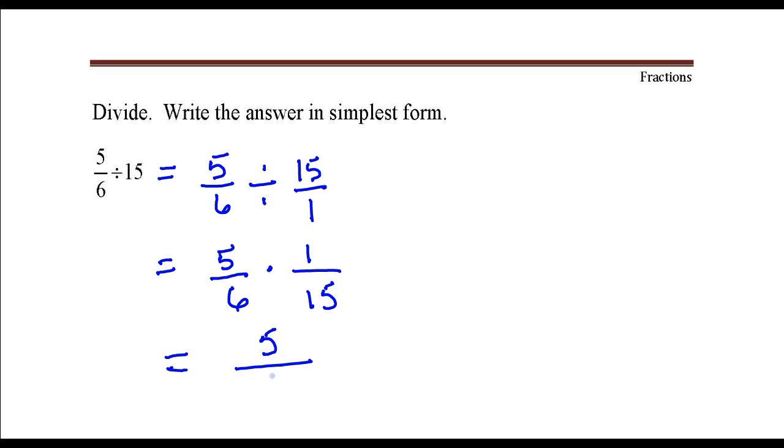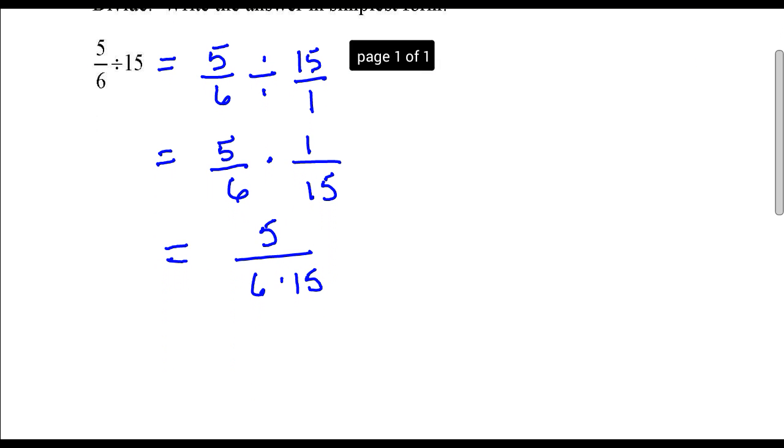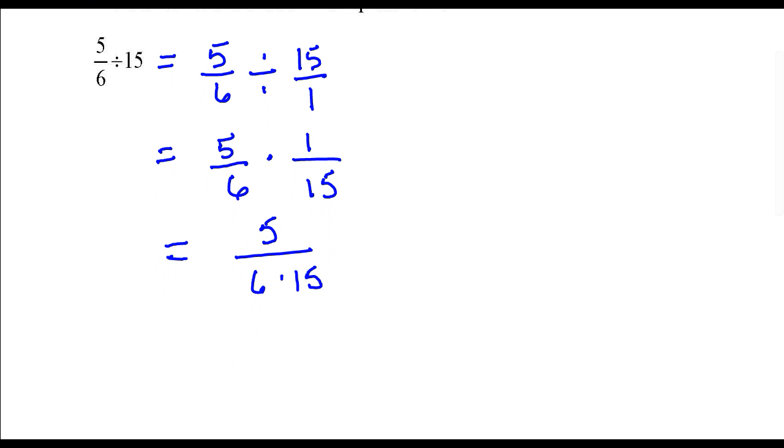6 times 15. Now let's divide out factors that are common to both numerator and denominator. 5 goes into itself once, it goes into 15 three times.